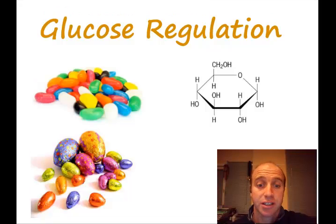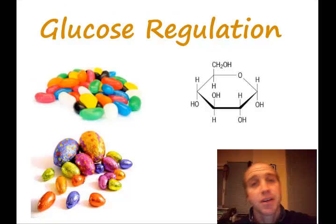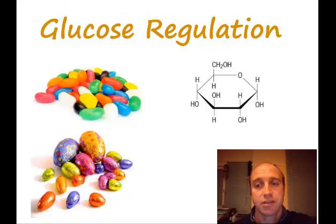In this screencast we're going to have a look at glucose regulation, and that might be a really applicable topic to study at the moment, being close to Easter with all our Easter eggs that we've been eating or all the jelly beans we might have been snacking on during the holidays. Glucose is a molecule made of six carbons. It's a carbohydrate, essential for all living cells for respiration. We're going to specifically look at how this chemical is regulated in the human body, and how we keep that optimum level so every cell can undergo cellular respiration.